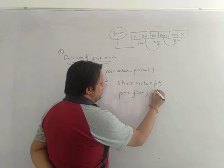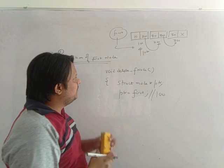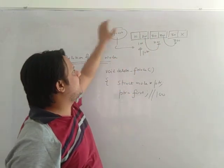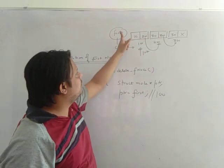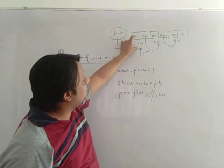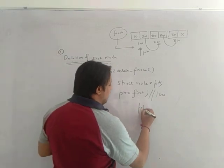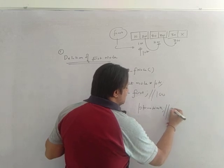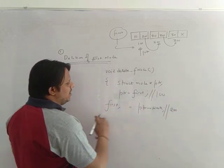Now my ptr is pointing at address 100. If you are going to delete this node, then the next node becomes the first node. So the first pointer should always point to the first node. We want first to be pointing to 200. And 200 is nothing but the link part of ptr — ptr arrow link — which is 200. We are going to assign this address 200 to our first pointer.